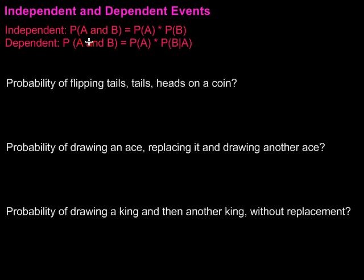For dependent events, the probability of A and B happening, we take the probability of A, so that's the same, but then we multiply by the probability of B, assuming that A happened. So, we'll talk about how that fits in, but we assume that it happened and then find the probability of our second situation.